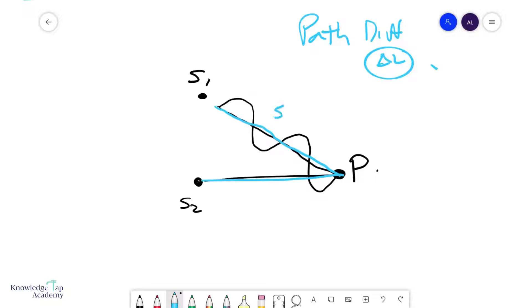So for example, if this was five meters, and this was six meters, then your path difference would be six minus five, which is one. Now, how does this introduce phase difference?